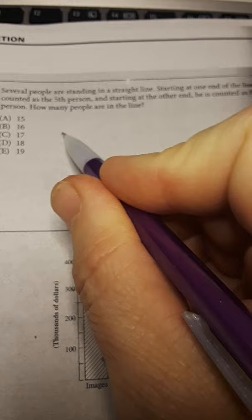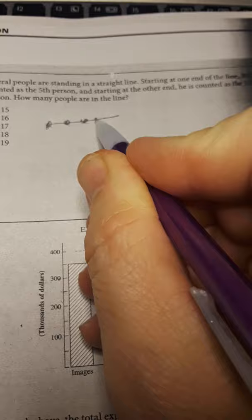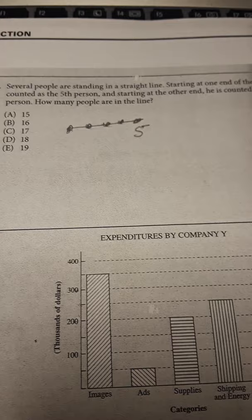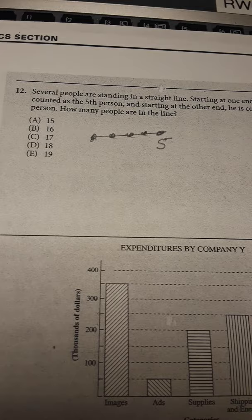So here's one end. Alright, they're the fifth person. One, two, three, four, five. Here's the fifth person. And starting at the other end, he's counted as the twelfth. You can't see it, but it's the twelfth person. How many people are in the line?